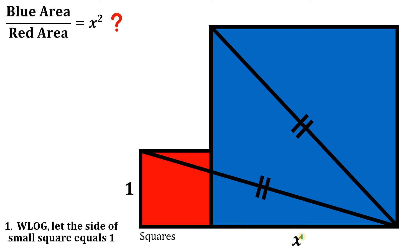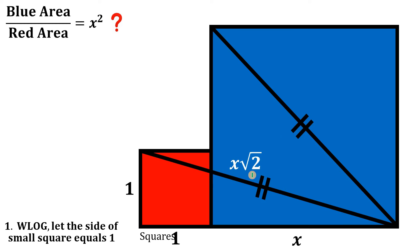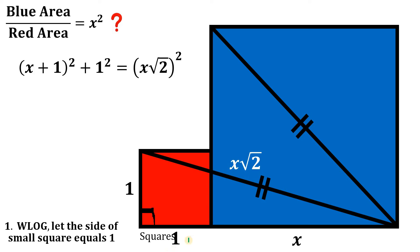Since the side of the big square is x, its diagonal measures x times the square root of two, following the rule of the 45-45-90 right triangle. This side length is also one because it's a side of the red square, and since the two segments are congruent, this segment is also equal to x times the square root of two. We have a right triangle, so we can use the Pythagorean theorem.